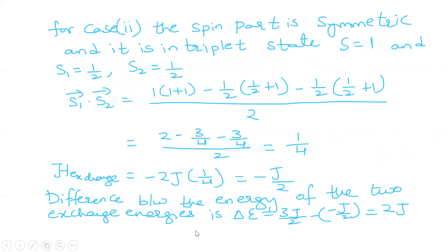The difference between the two exchange energies is Δ = 3J/2 − (−J/2) = 2J. Based on this expression we are going to classify magnetic materials in the next lecture, where we will see how magnetic materials are classified based on the expression Δε = 2J. Thank you for watching this video; if you have any queries write in the comments and see you in the next lecture.